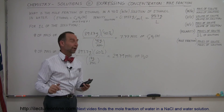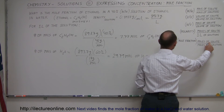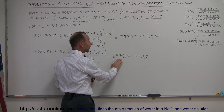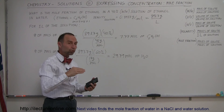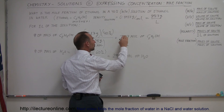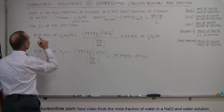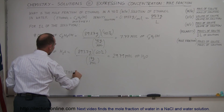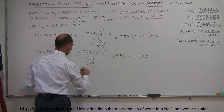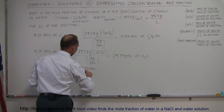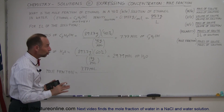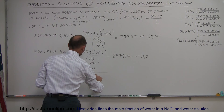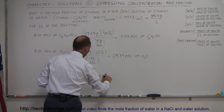Now we can go ahead and find the mole fraction. By definition, it's the number of moles of the solute divided by the number of moles of the solution. Be careful here — it's not just the moles of water; it's the moles of the total solution, which is the sum of the moles of ethanol plus the moles of water. So the mole fraction equals 7.77 moles divided by 7.77 plus 29.79 moles.